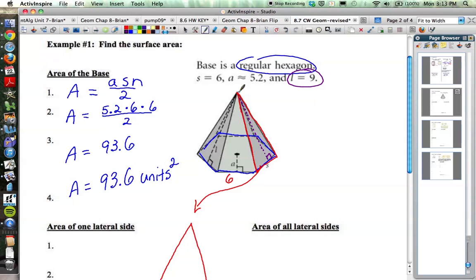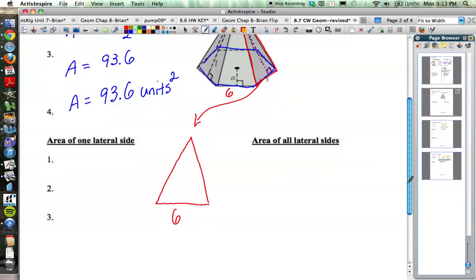If you take that out, it's the distance from the vertex perpendicular to the base of that triangle. So we actually do know this distance right here, the height of the triangle, which is 9, because that is the slant height of our pyramid.